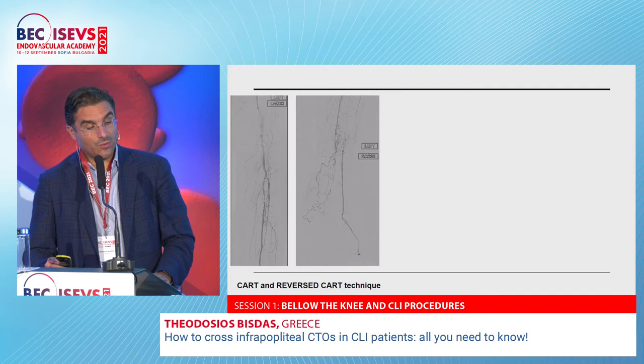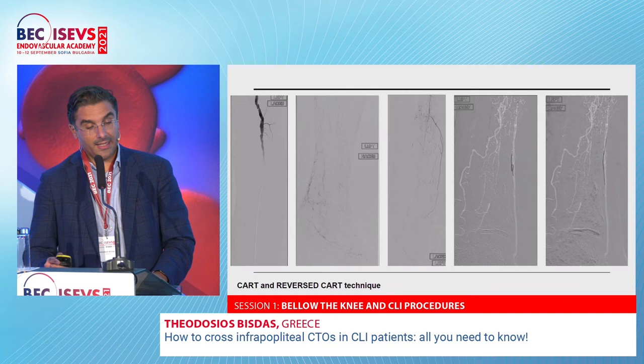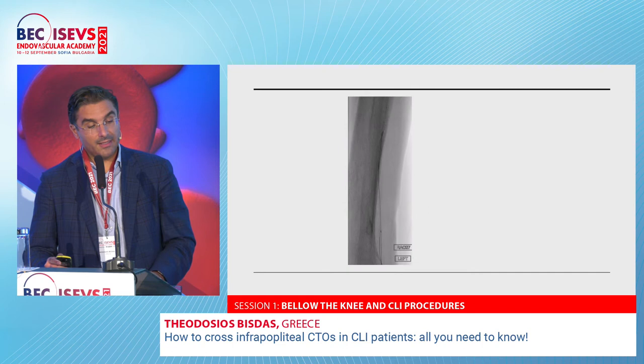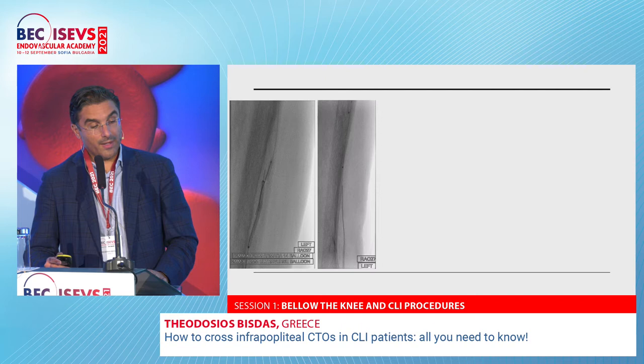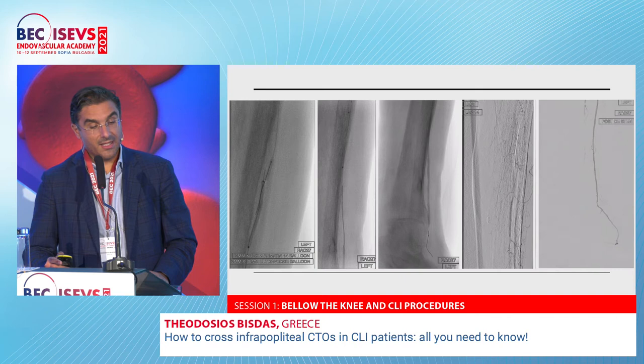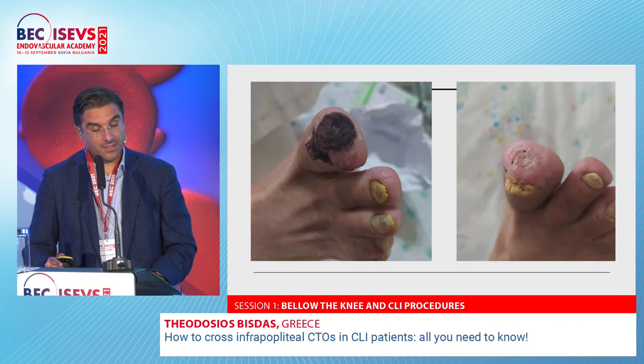Here is a case with an occluded dorsal pedal artery. We tried from above, went subintimally, and couldn't get intraluminal again. We then punctured retrogradely and attempted re-entry using the parallel balloons technique. By this technique, we were able to advance the wire, and after balloon angioplasty we had a very nice result with good perfusion — we could keep the first two toes despite the osteomyelitis present.